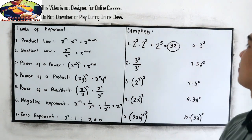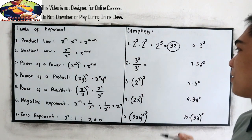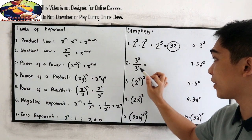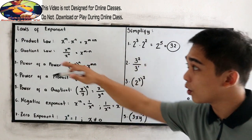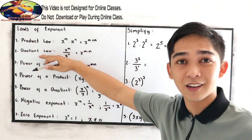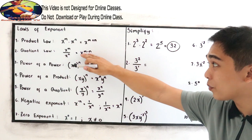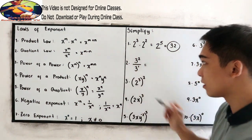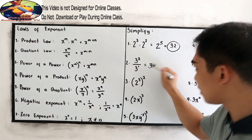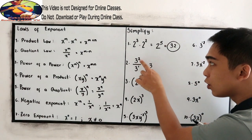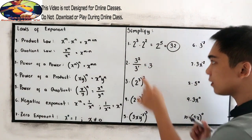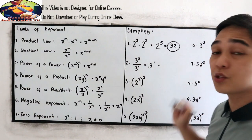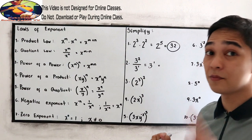Number 2: 3 squared over 3 raised to 1. We apply the quotient law — subtract the exponents since we have the same base. Copy the base, then subtract: 2 minus 1 equals 1. So we get 3 raised to 1, which is simply 3.